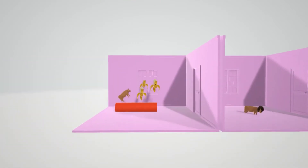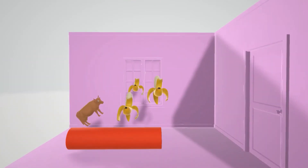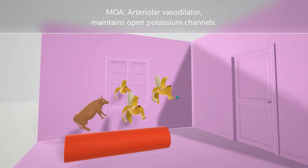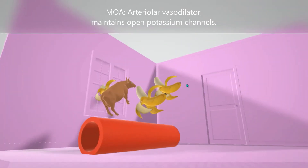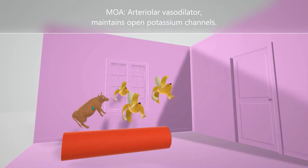Minoxidil is an arteriolar vasodilator, represented by the artery on the floor getting really big and wide, with the mini ox jumping on top of it and watching the potassium fly out of the window. Bananas in our video represent potassium because bananas are high in potassium.